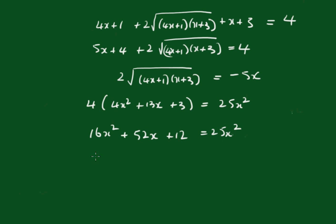Taking this across the other side, we get 9x² minus 52x minus 12 equals 0.